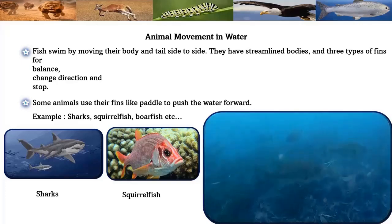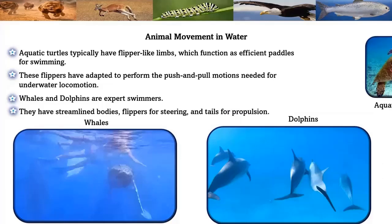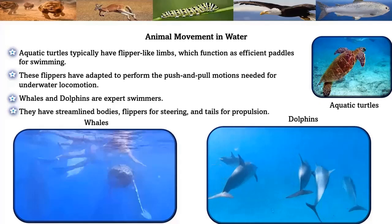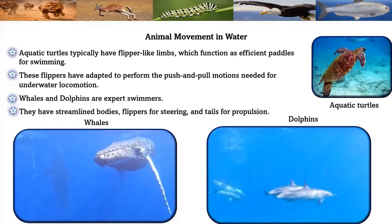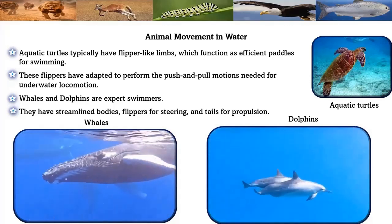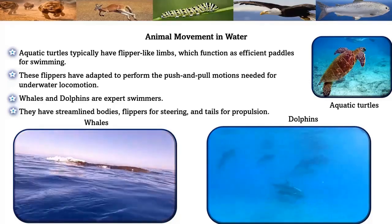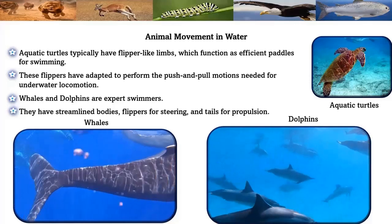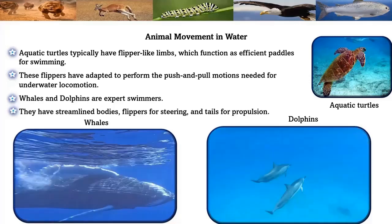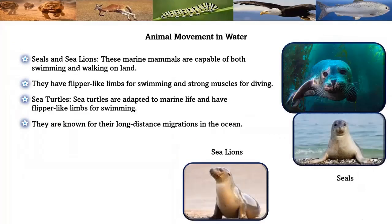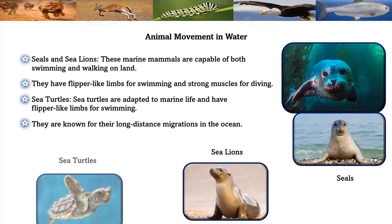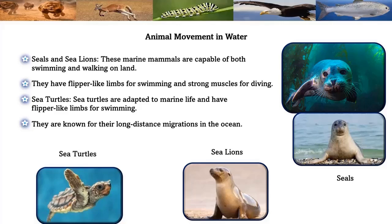Aquatic turtles typically have flipper-like limbs which function as effective paddles for swimming, adapted to perform push and pull motions needed for underwater locomotion. Whales and dolphins are expert swimmers with streamlined bodies, flippers for steering, and tails for propulsion. Seals and sea lions are capable of both swimming and walking on land, with flipper-like limbs for swimming and strong muscles for diving. Sea turtles are well adapted to marine life and have flipper-like limbs for swimming.